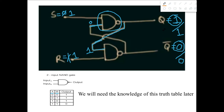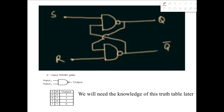Now let's start the whole illustration again from the very beginning, erasing all inputs and outputs. We're going to consider S equals one and R equals zero. Since R equals zero and this is a NAND gate, Q prime will be one. If Q prime is one, then Q should be zero, since Q prime is the complement of Q. We'll keep those outputs — Q equals zero, Q prime equals one — and change the inputs to one and one.